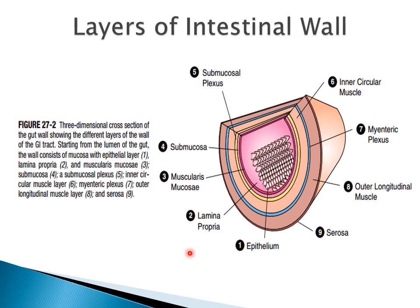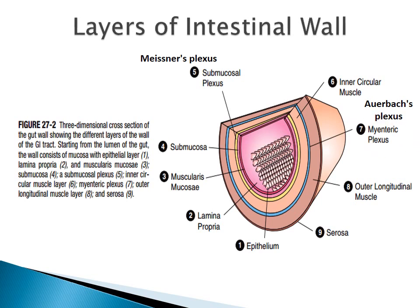This is a brief overview of what we will discuss in detail regarding the intestinal segment layers. Two important names to remember: the submucosal plexus is also called Meissner's plexus, and the myenteric plexus is also called Auerbach's plexus. These generally constitute what we will discuss later as the enteric nervous system.